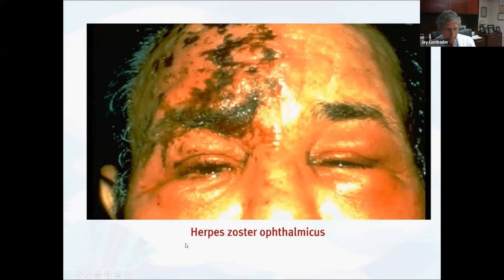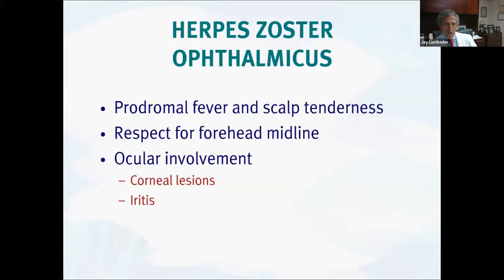Zoster is a big problem for both of us. The ocular complications in zoster can really be devastating. In addition to post-herpetic neuralgia around the eye, it can cause very significant long-term problems with the cornea — reduced corneal sensation, chronic corneal ulcers, severe dry eye, chronic inflammation, and chronic iritis. These patients can really be a mess.